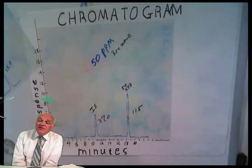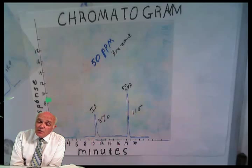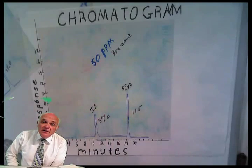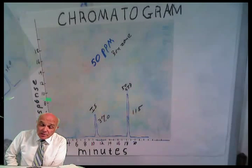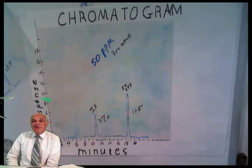So let's say for example the injection doesn't work quite right and you only get, instead of one microliter, you get half a microliter. Well, both peaks will be half as big approximately, but the ratio will still be the same, so you can still use this standard.